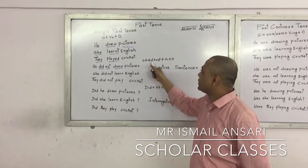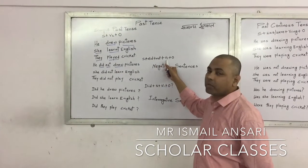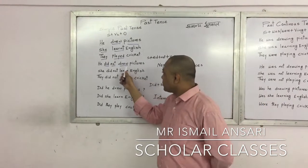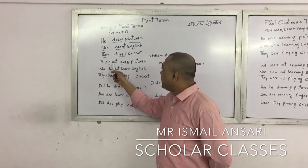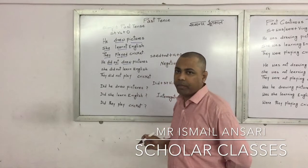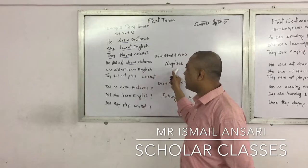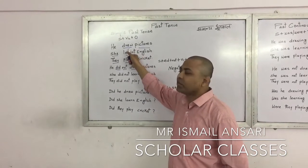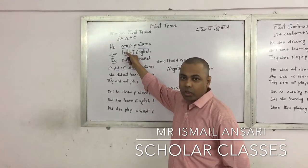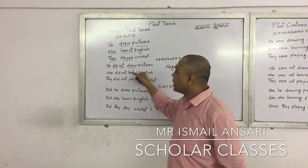Subject plus did plus not plus the first form of the verb plus object. For example: He did not draw pictures. This is our sentence in the negative form. Note that we use the first form of the verb — so 'drew' becomes 'draw'.